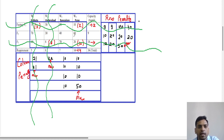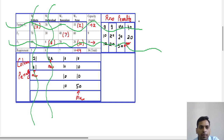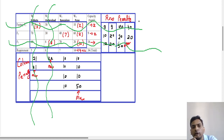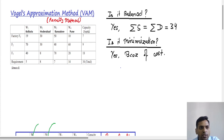Now only two numbers remain — 40 and 60. There is no need to find penalties. We directly take the least number, which is 40, and put a bracket on it. The corresponding demand is 9 and supply is 7, so we take the minimum, which is 7. We allocate 7 units, and the remaining demand becomes 2, so we put 2 for the other cell.